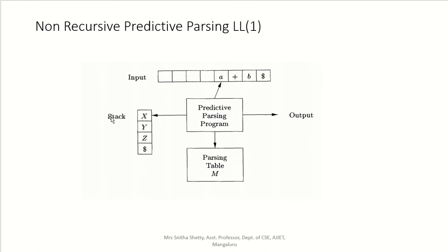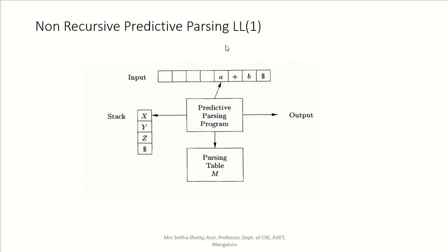The LL1 parser needs an input buffer where input characters are stored, and input always ends with dollar. It needs a stack — the bottom of the stack always contains dollar. It also needs a predictive parsing program and a parsing table. To construct the parsing table, we need to know the first function and follow function, and finally we get the output.